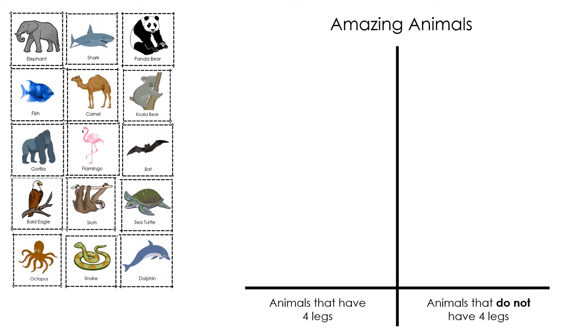One category will be animals that have four legs. And the other category will be animals that do not have four legs. I will sort the animals into two groups.